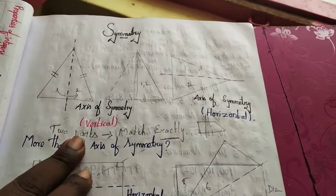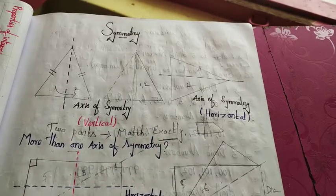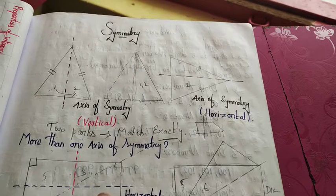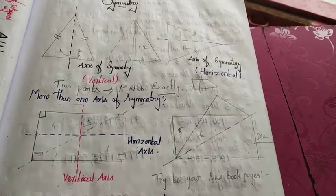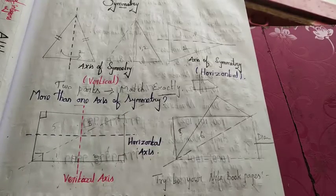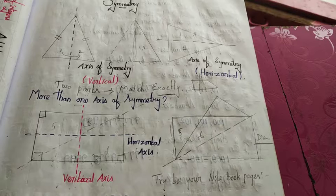So two parts match exactly. If you have two parts or three parts, they match exactly — the parts match exactly. If you match the same way, it is a symmetrical line. Moreover, there can be more than one axis of symmetry. If we can drop one line on a figure, we can also drop more than one axis.